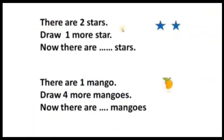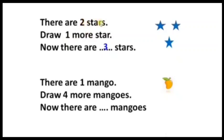There are two stars. Draw one more star. Now there are dash stars — how many in all? Count: one, two, three. In that blank, write three stars. First two stars are there, draw one more star, and you get finally three stars.